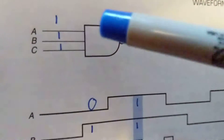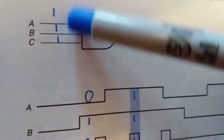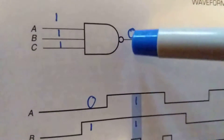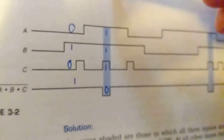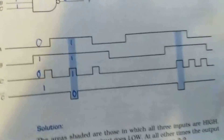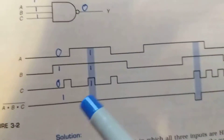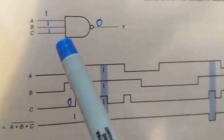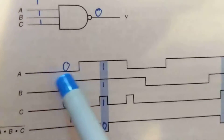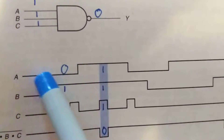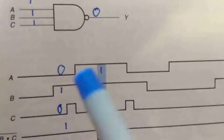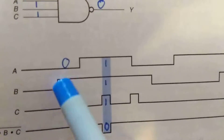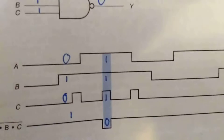Now we're going to the NAND gate. All ones give us a zero — remember, a bubble means a zero output. Let's look at it with respect to time. This is a zero, a low; this is a one; and this is a zero; this is a one.